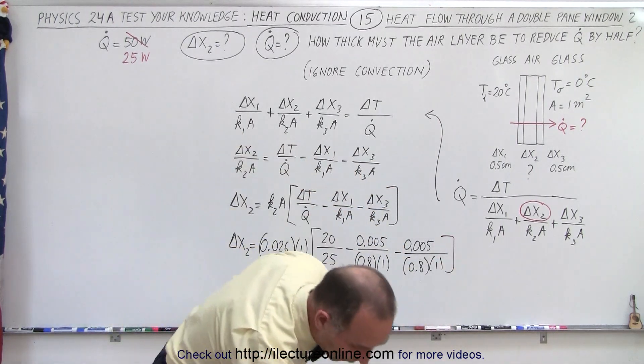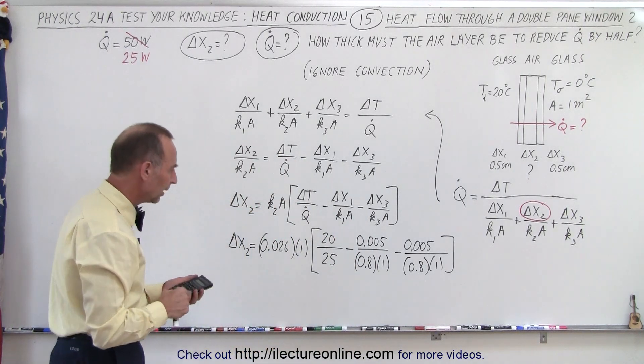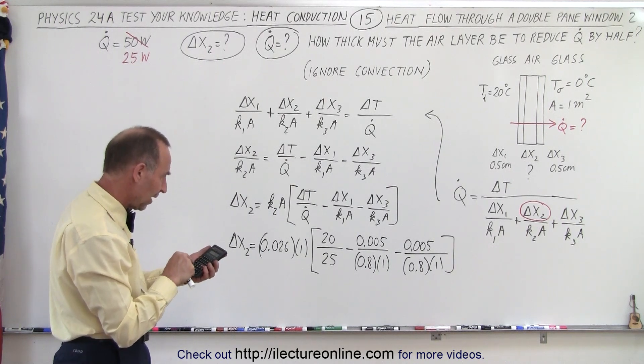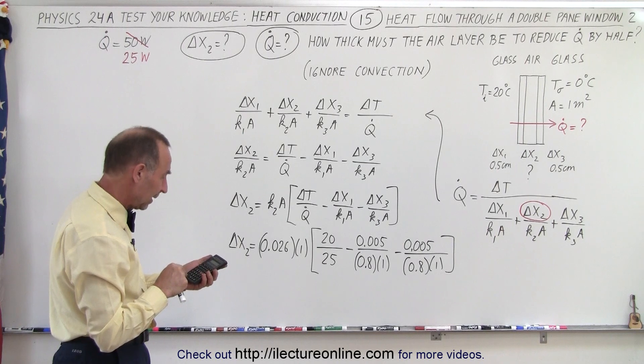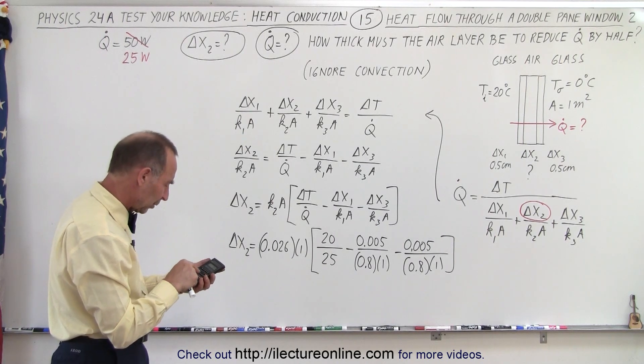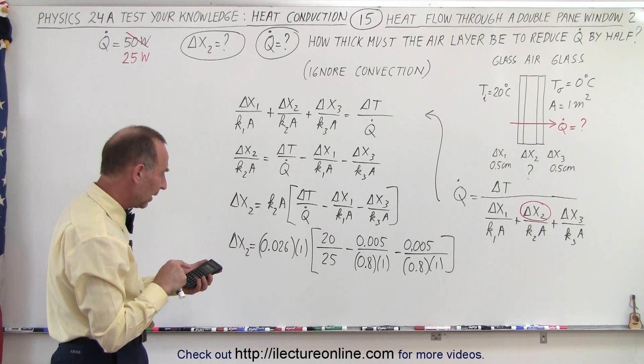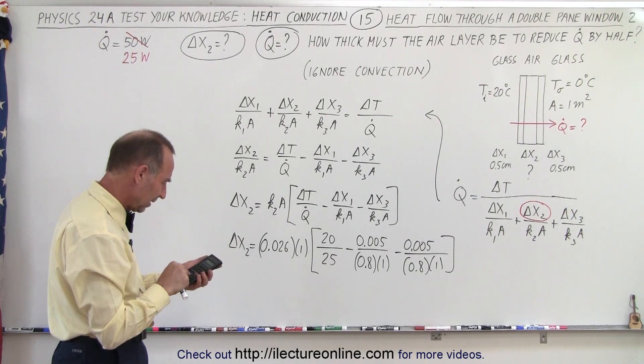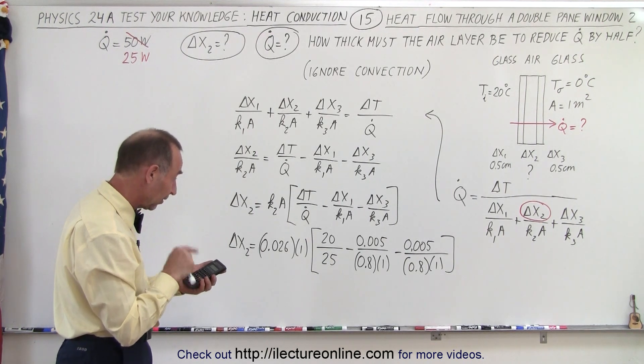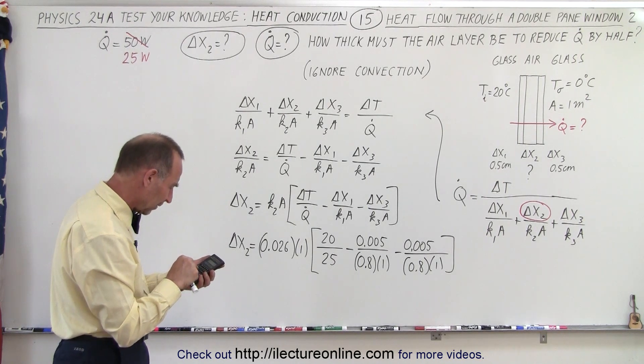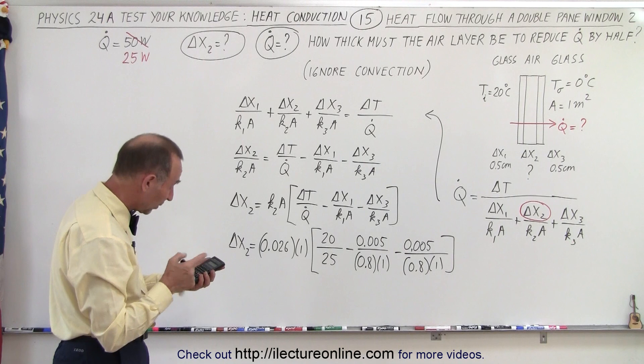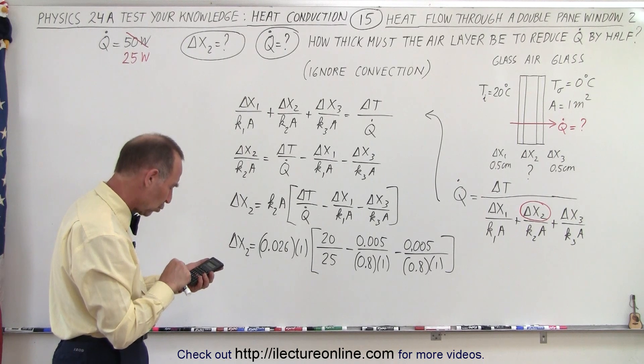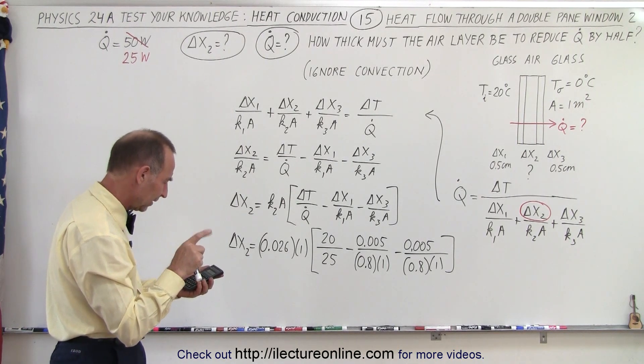Okay, with the calculator we should be able to figure out what that is equal to. So let's add those two together. So we have 0.005 divided by 0.8 and now we multiply times 2 because there's two of those and we subtract that from 0.005 divided by 0.8 times 2 minus plus 20 divided by 20.5. 20 divided by 25, that's 0.8 equals. Now we multiply times 0.026 equals, and there it is.